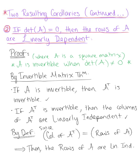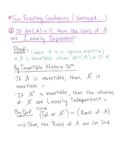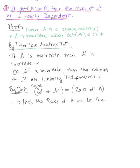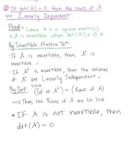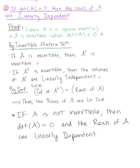Thinking back to our invertible matrix theorem, we know that these statements are logically equivalent — they're all either true or all false. Using these conclusions, we can say that if matrix A is non-invertible, then the determinant of A is equal to zero and the rows of A are linearly dependent, because the columns of A transpose are also linearly dependent. We're now ready to use these corollaries in simplifying the process of finding the determinant of larger matrices.